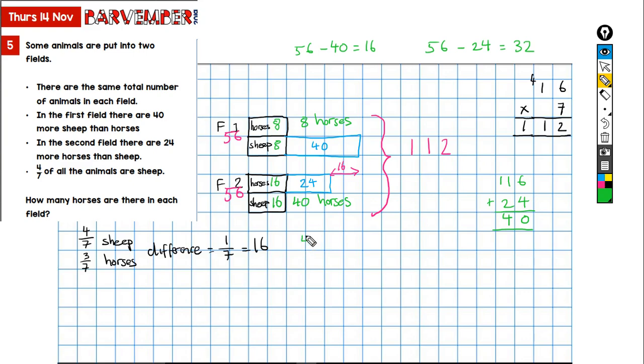Which gives me, and I can check this, let's just check this, that gives me 48 horses. I think there's 48 horses in total, 8 in field one, 40 in field two, which is my question answered.